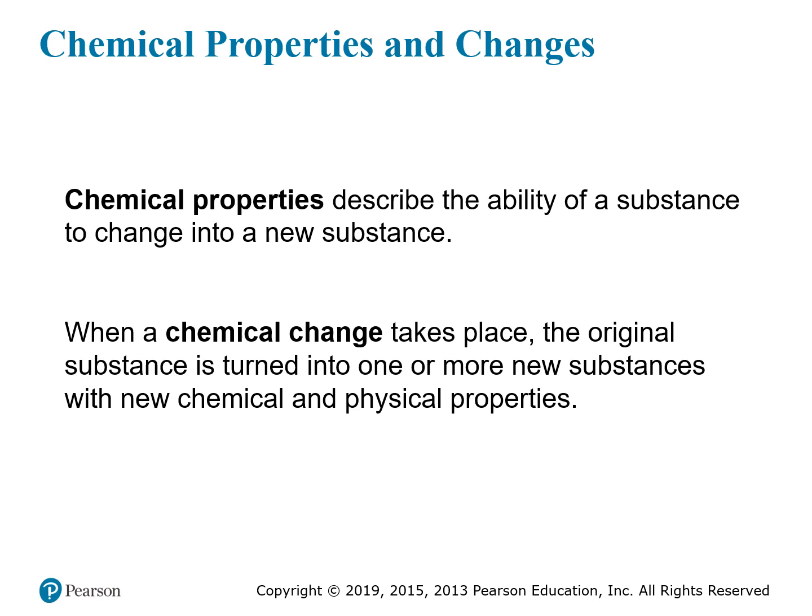In contrast with physical properties, substances also have chemical properties, which describe how the substance can turn into a new substance — the ways in which its composition can change or the ways it can react with other substances or energy. When a chemical change takes place, the original substance is turned into a new substance with new chemical properties because it has a new structure and composition. It'll usually have new physical properties as well, and in chemistry we often observe changes in physical properties to provide evidence that a chemical change has occurred.